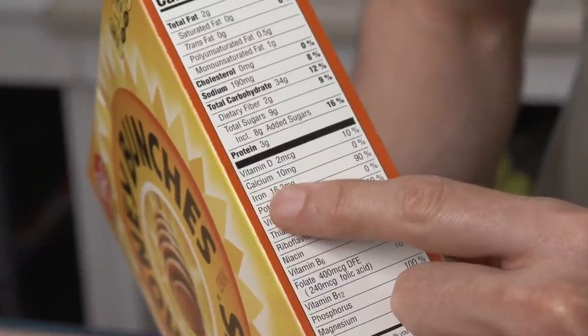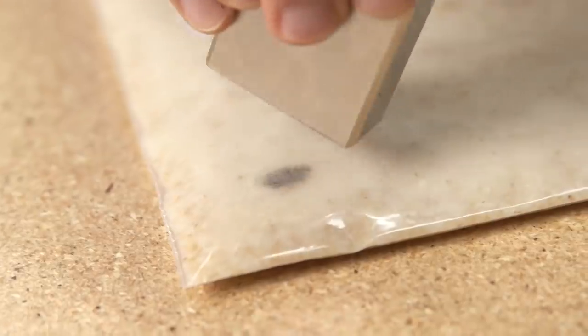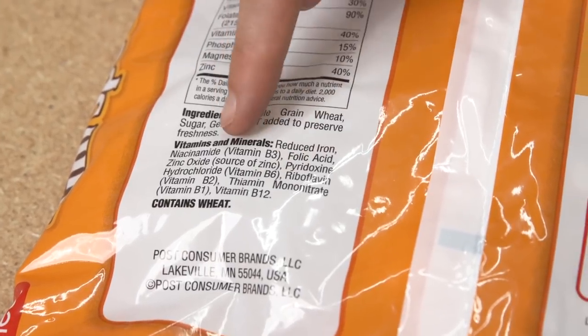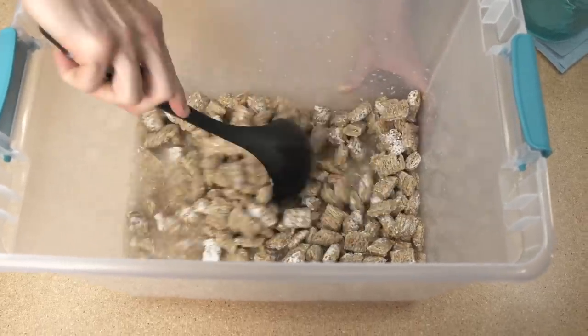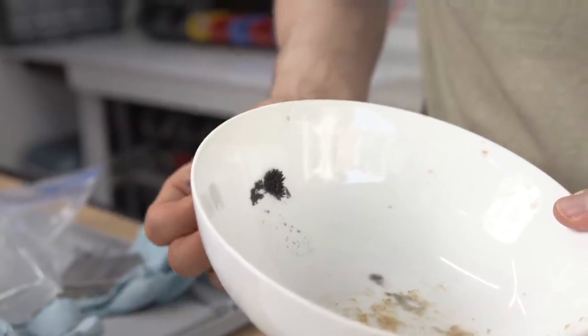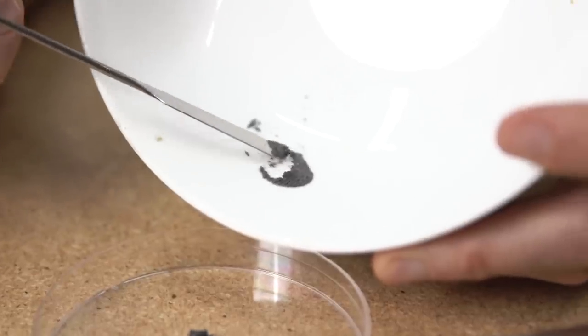Now the cereal says right on the box that there's iron in here, but it's kind of mind-blowing to actually see the metal. The iron was added on purpose. When you add vitamins and minerals to cereal, it's called fortifying to increase nutritional value. This science demonstration is pretty classic showing iron in cereal, but I wanted to take it one step further.